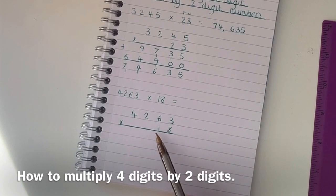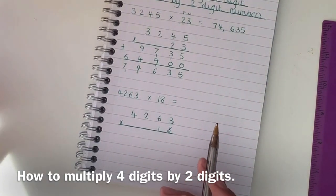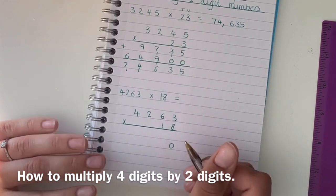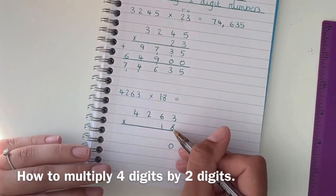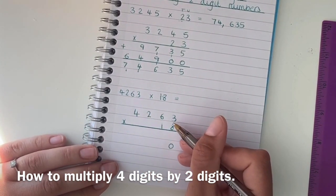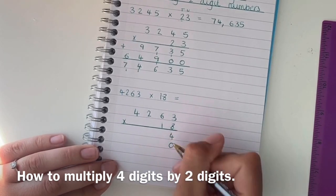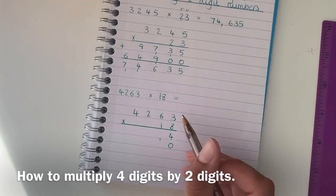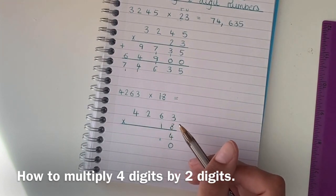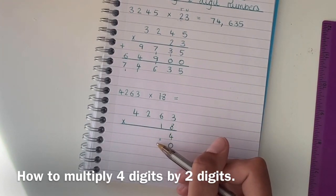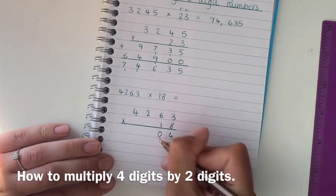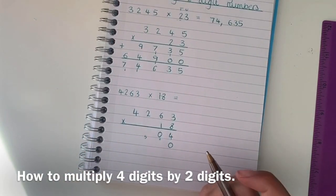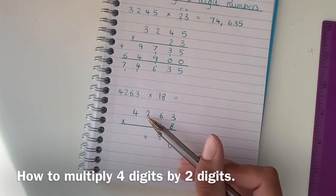Right, remember because we're multiplying by a 10 here, the first thing I need to do is put my placeholder zero in and now I can start multiplying this number by 8. So 3 times 8 is 24 so I'm going to put my 4 down and carry the 20 over just a little there. 6 times 8 is 48, adding that 2 would be 50. So I'm going to put my 0 down and carry 5 over.